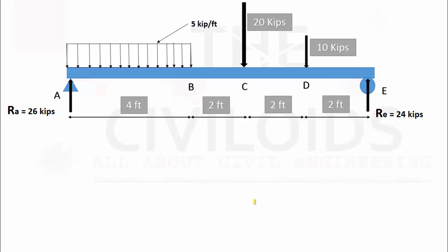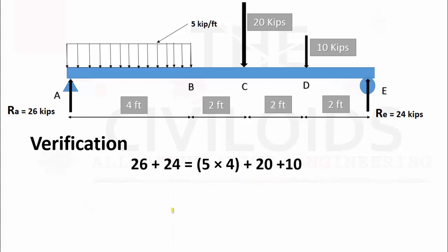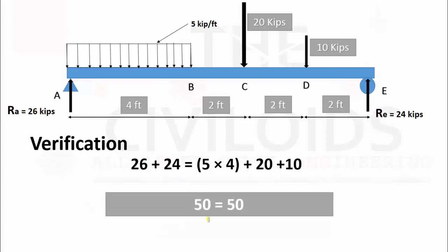Now we have determined both reactions of the beam: RA and RE. To check that we have calculated these reactions accurately, we can verify the result by confirming that the sum of upward forces must equal the sum of downward forces. The upward forces are RA = 26 and RE = 24, totaling 50. The downward forces are the distributed load, the 20 kip force, and the 10 kip force, also totaling 50. This confirms we have calculated all results accurately.